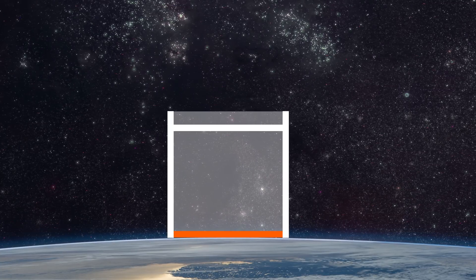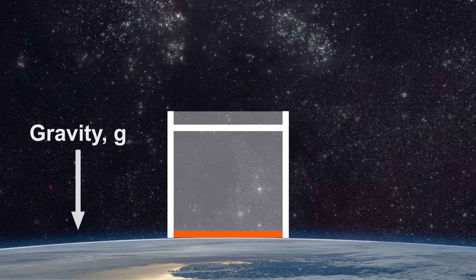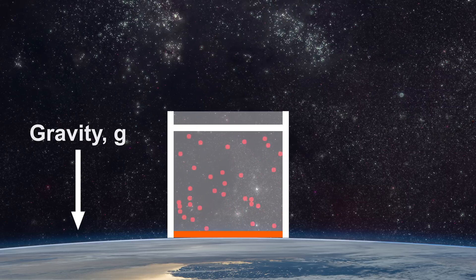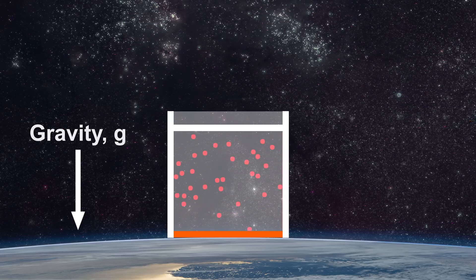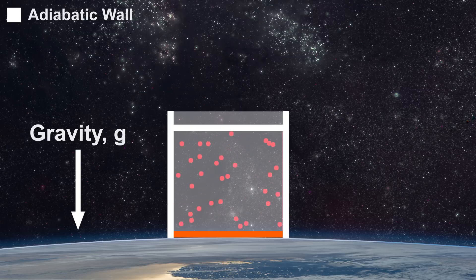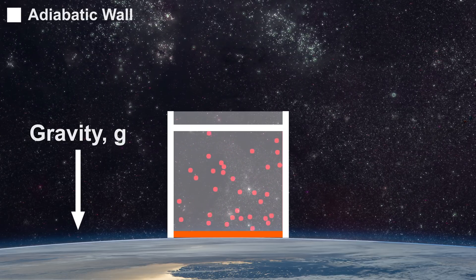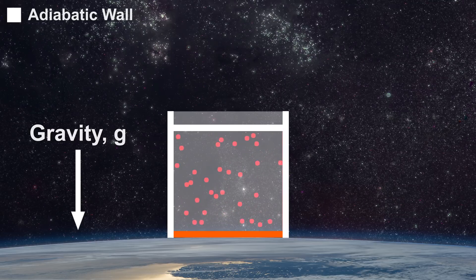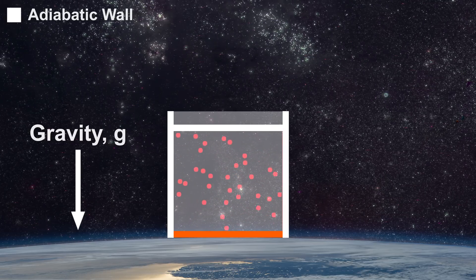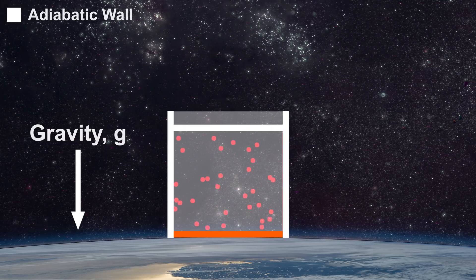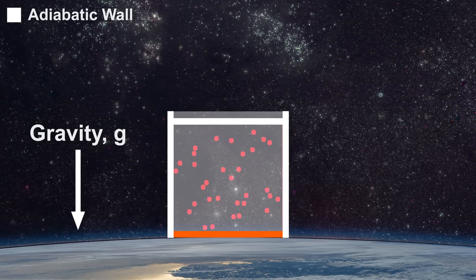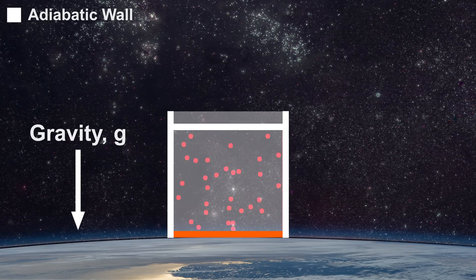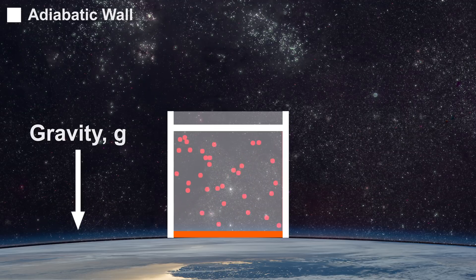Imagine a cavity on earth which experiences gravity and is filled with helium atoms. The sides and upper portion of the cavity are comprised of adiabatic walls. You recall from the video on the zeroth law that adiabatic walls do not allow the transfer of energy as heat or light. The top portion of this particular adiabatic wall is movable, creating a piston. This allows work to cross the adiabatic wall.